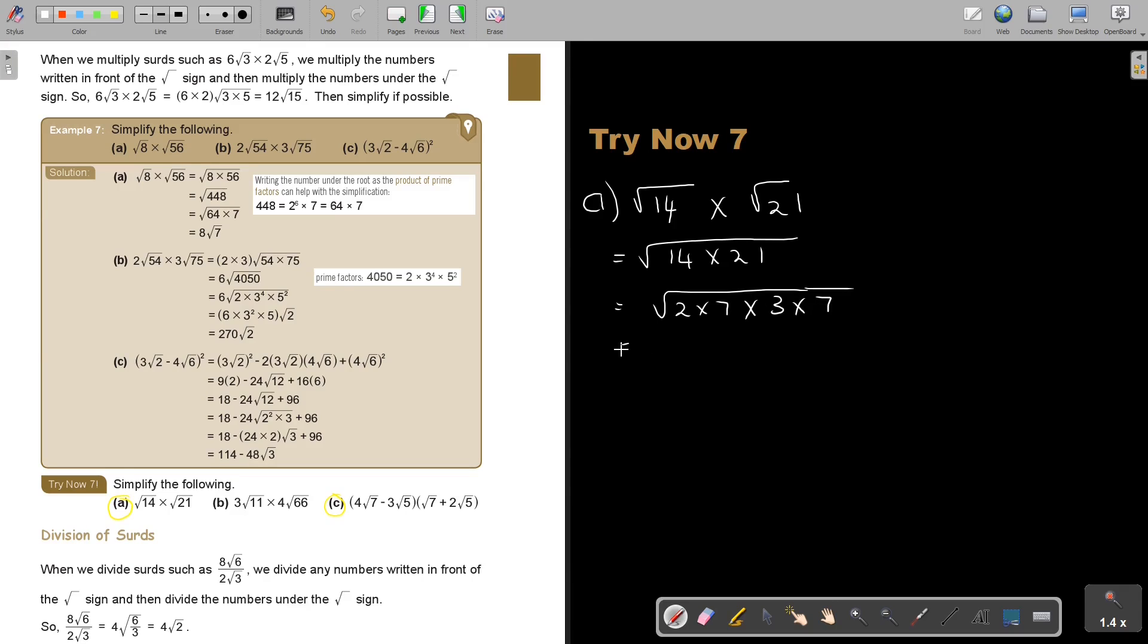So then I get 2 times 3 times 7 squared. So the 7 can come out. Do you see that? So it's 7, and 2 times 3 that will just be 6. That's how I simplify this one.